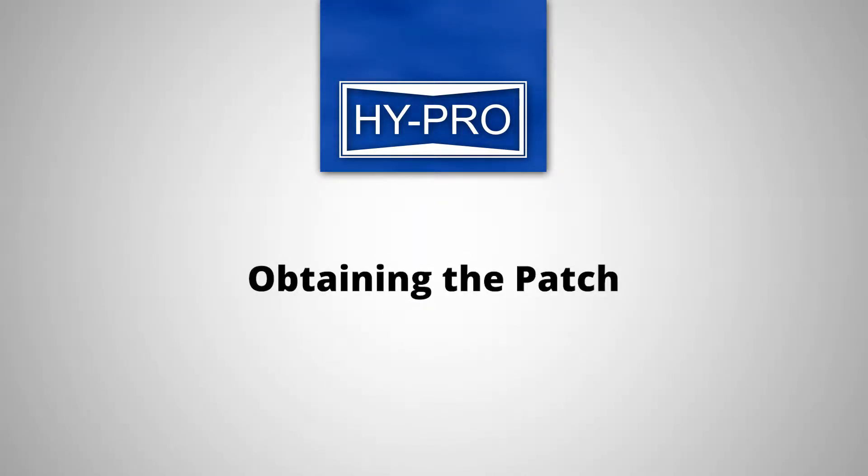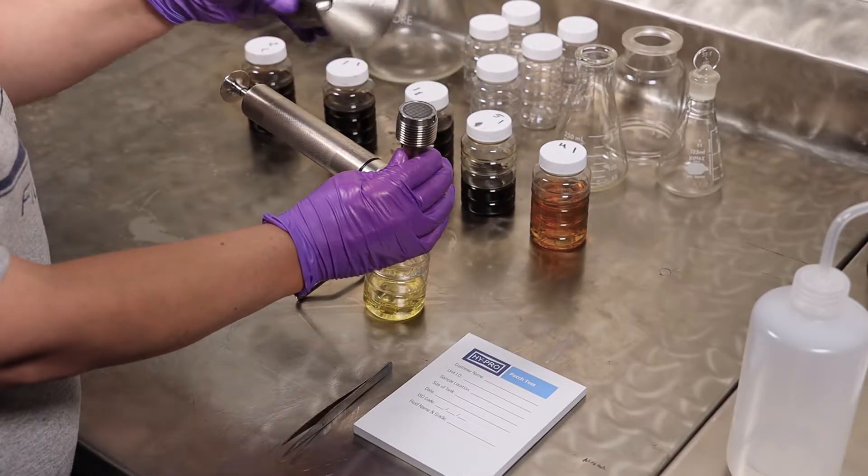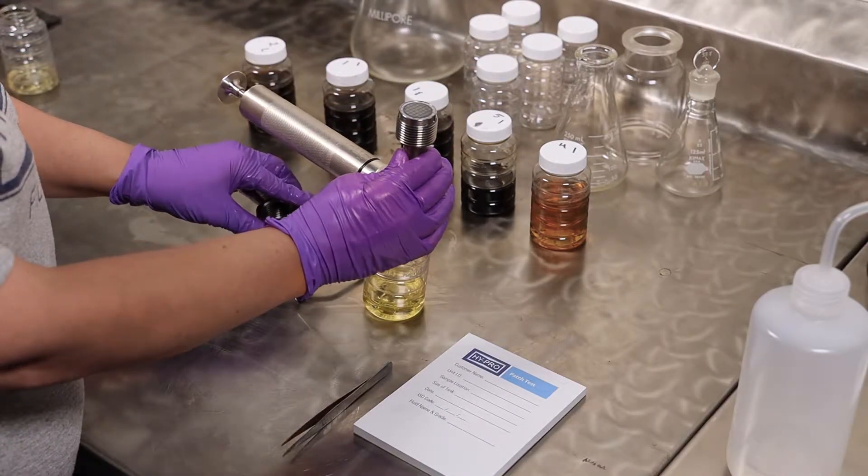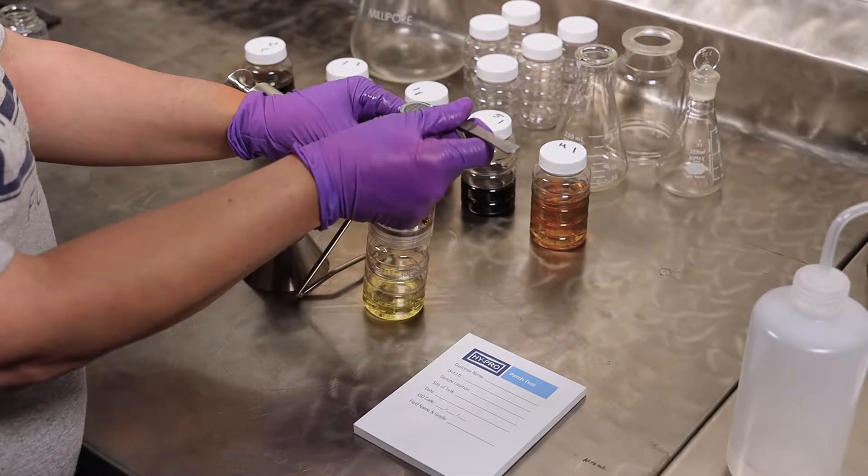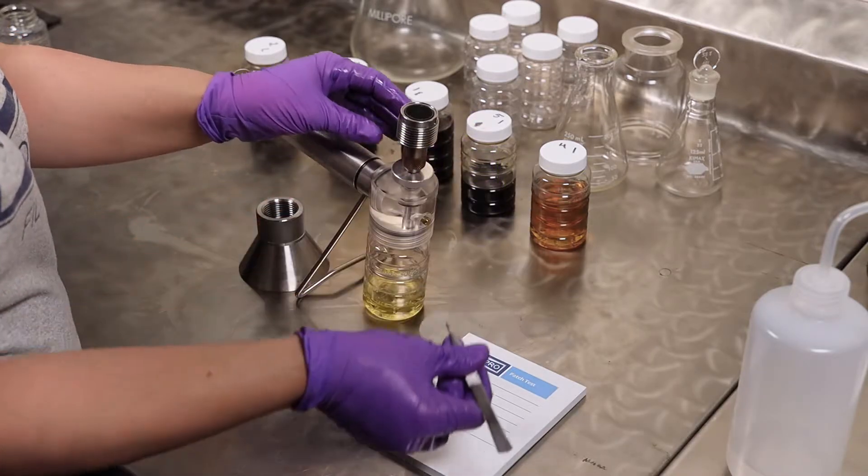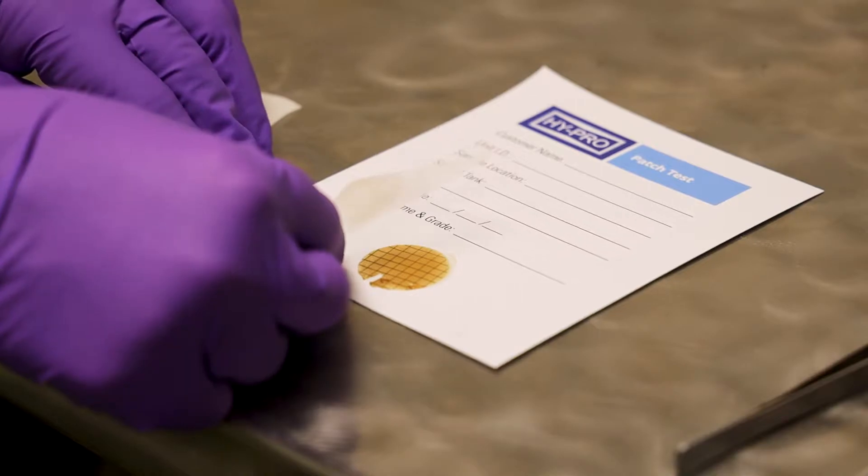Obtaining the patch. Separate the funnel from the patch supporter and remove the patch with forceps. Place the sample with the dirty side facing up onto a clean sample reference card and cover it immediately with a plastic laminate patch cover.